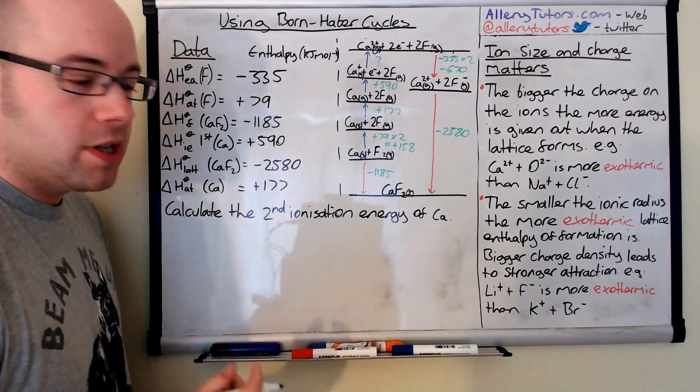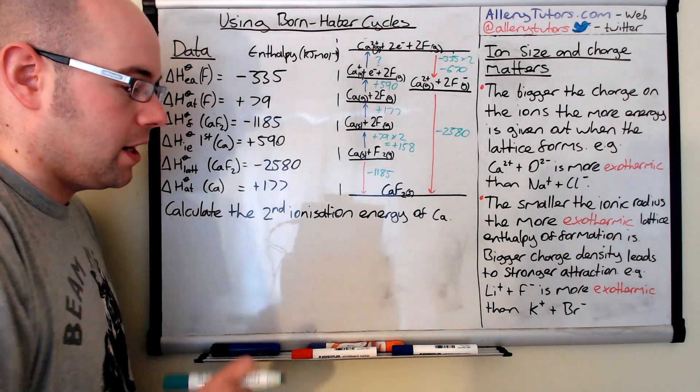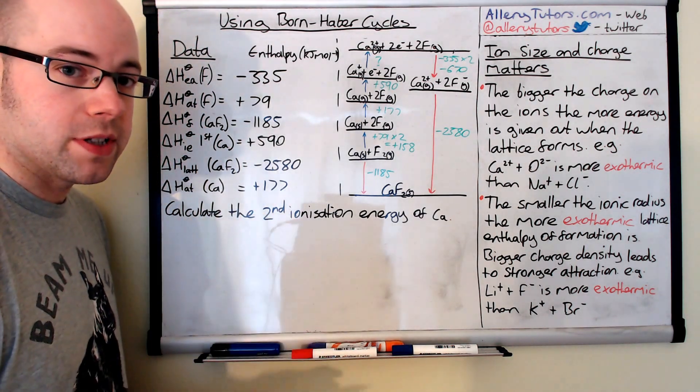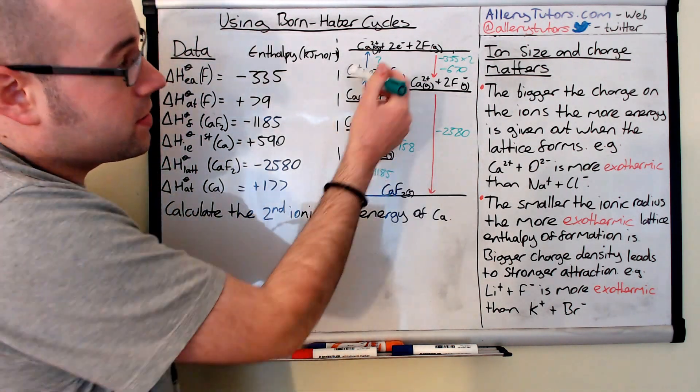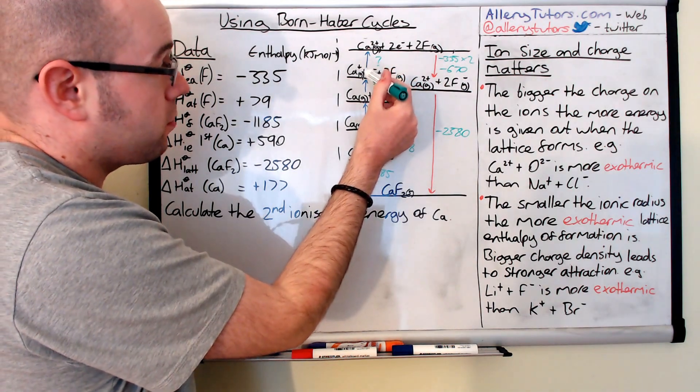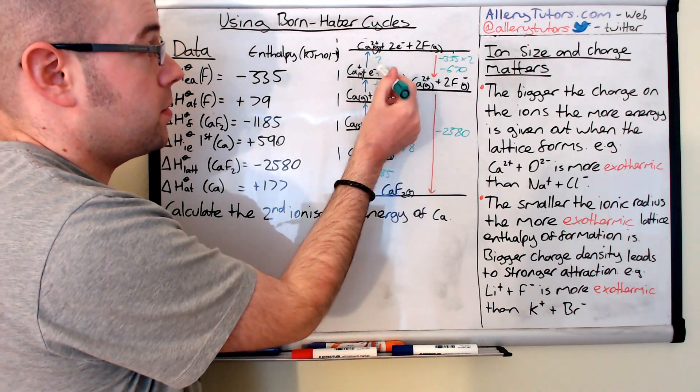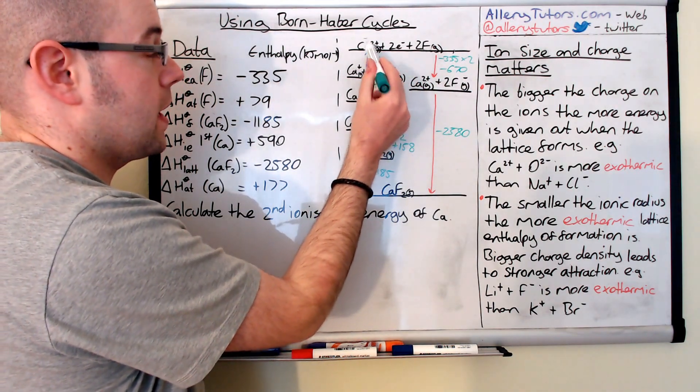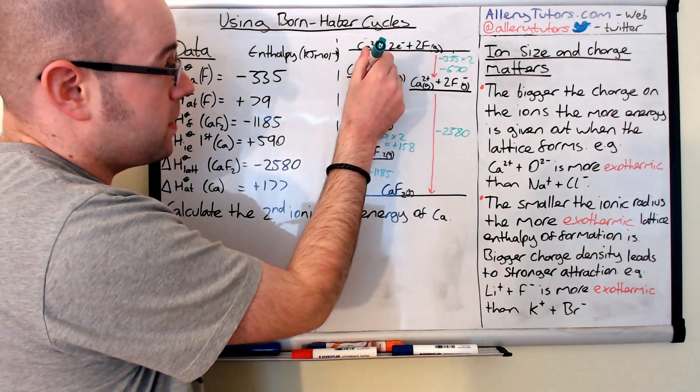Okay so what we need to do now is we need to work out the second ionization energy. So we need to use the cycle to work this out. So you can see here we're starting from here. We want to get from here to here because this is the value that we'll want to work out going upwards like that. So we start from here.